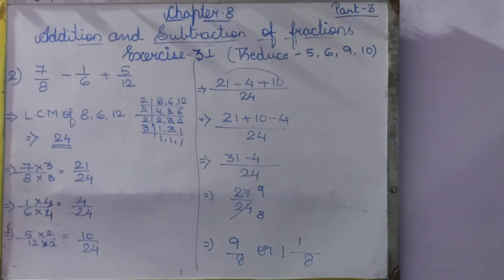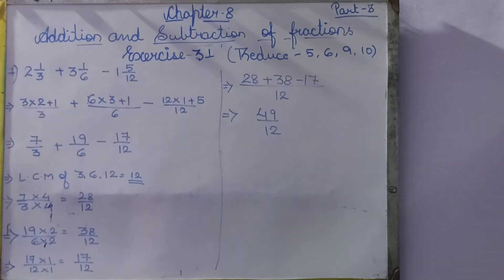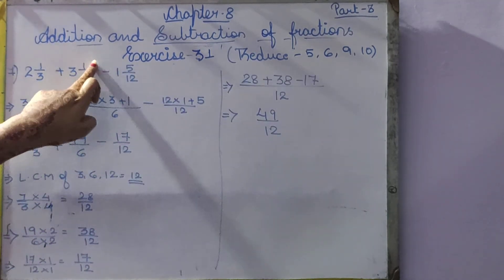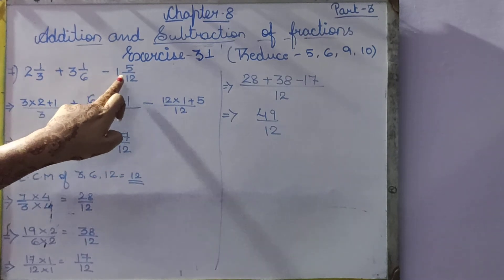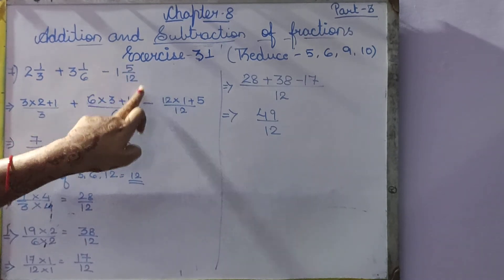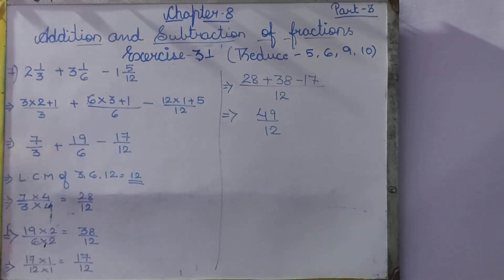Mark question numbers 3 and 4 as homework — they are the same as question numbers 1 and 2. Question number 7: 2 and 1 by 3 plus 3 and 1 by 6 minus 1 and 5 by 12.